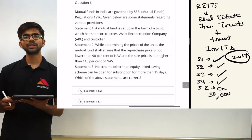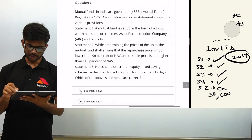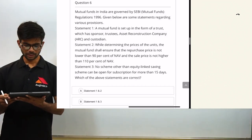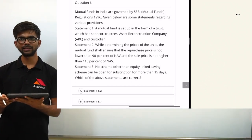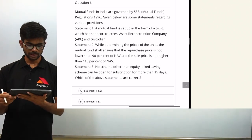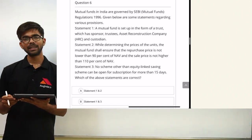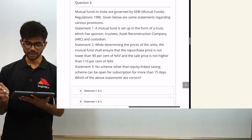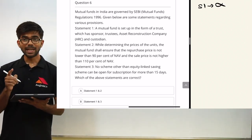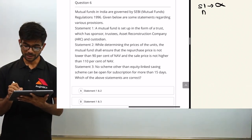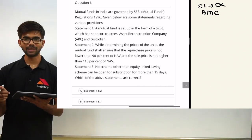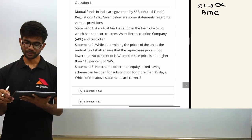Question six: mutual funds in India are governed by SEBI regulations. Given are statements regarding various provisions. Statement one says a mutual fund is set up in the form of a trust with sponsor, trustee, asset reconstruction company, and custodian. This is incorrect — it is not asset reconstruction company (ARC) but asset management company (AMC). The four parties are sponsor, trustee, AMC, and custodian. So statement one is incorrect.